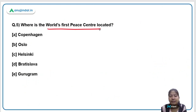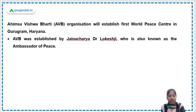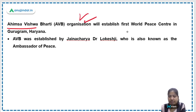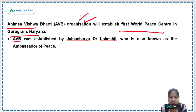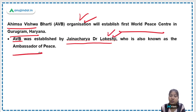The next question: Where is the world's first peace center located? It has been recently inaugurated in Gurugram, Haryana, India. Ahimsa Vishwa Bharti is the organization that developed this first peace center of the world. It was established by Jain Acharya Dr. Lokesh, who is known as the ambassador of peace.